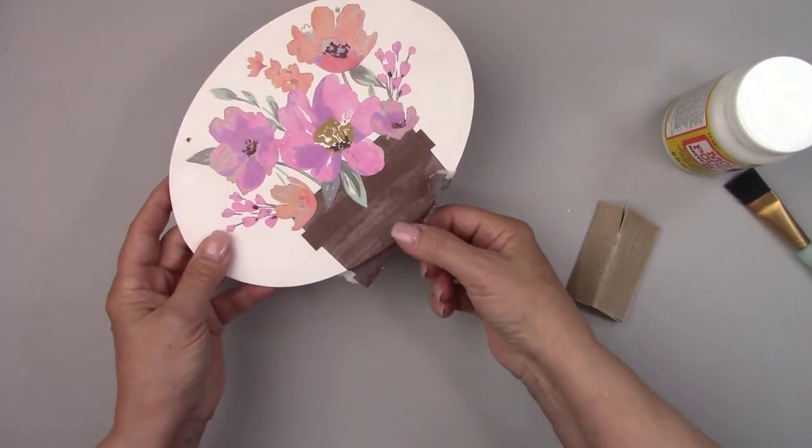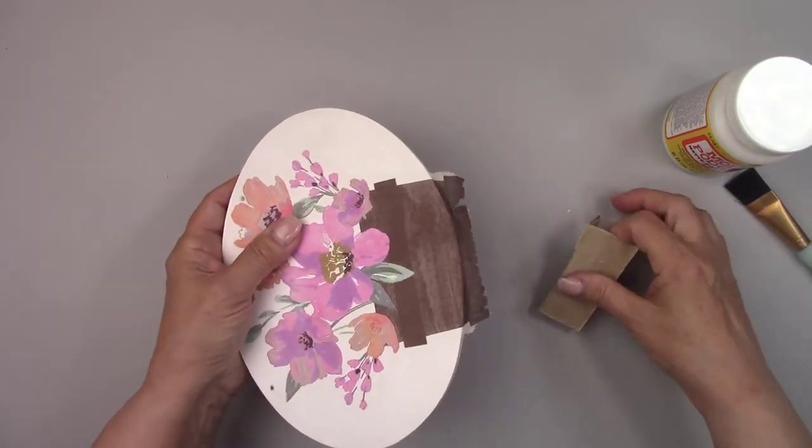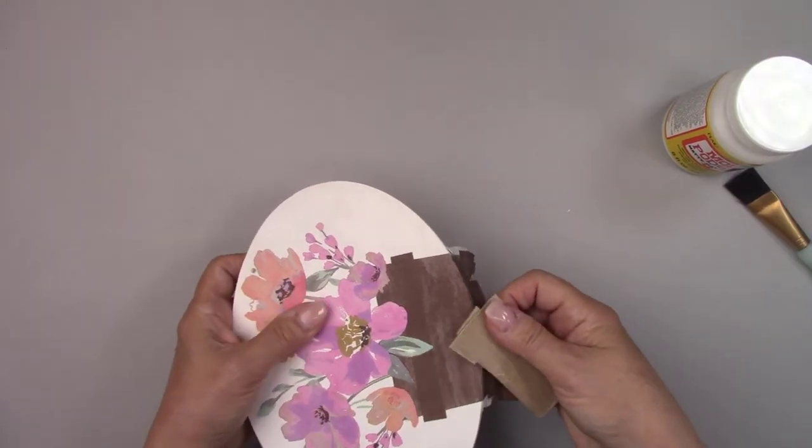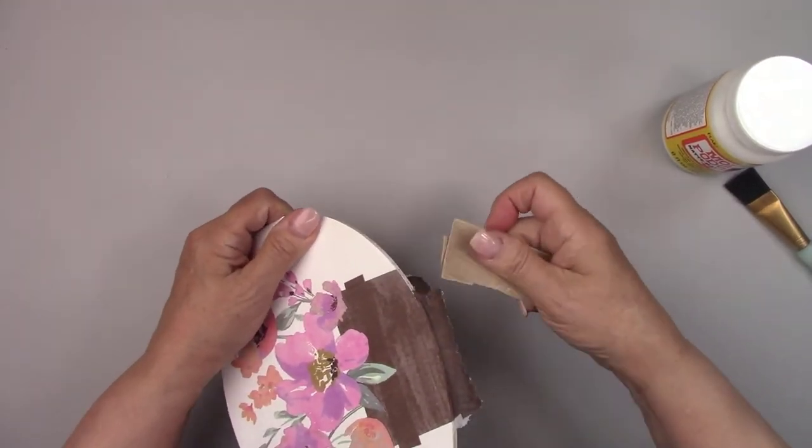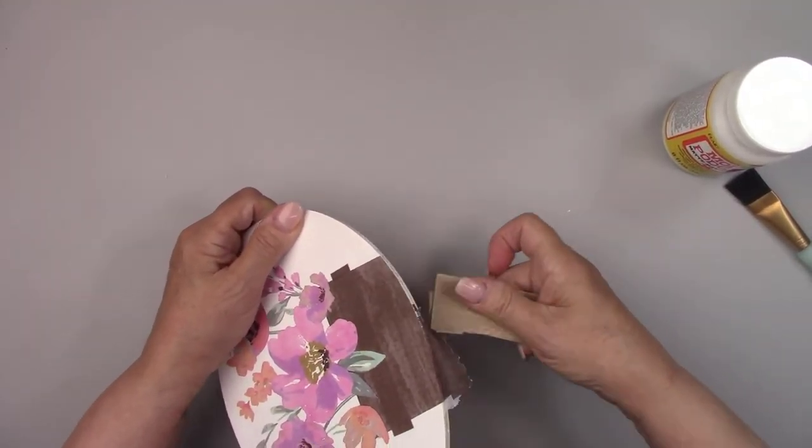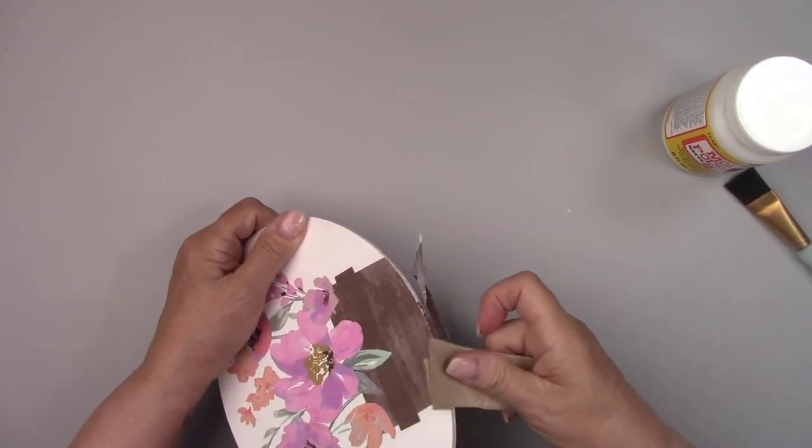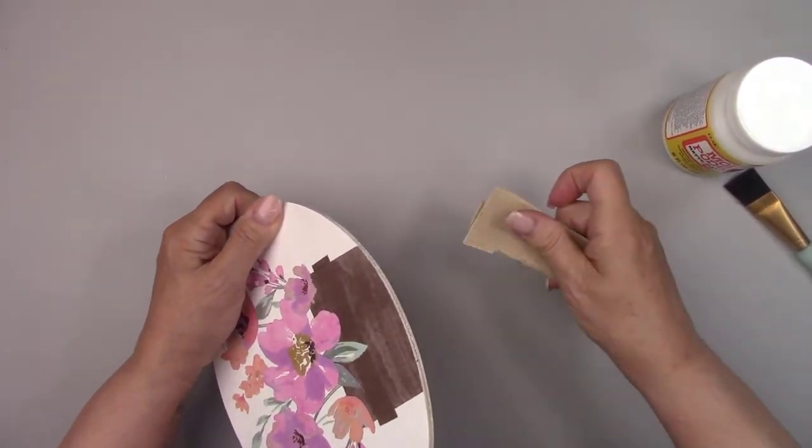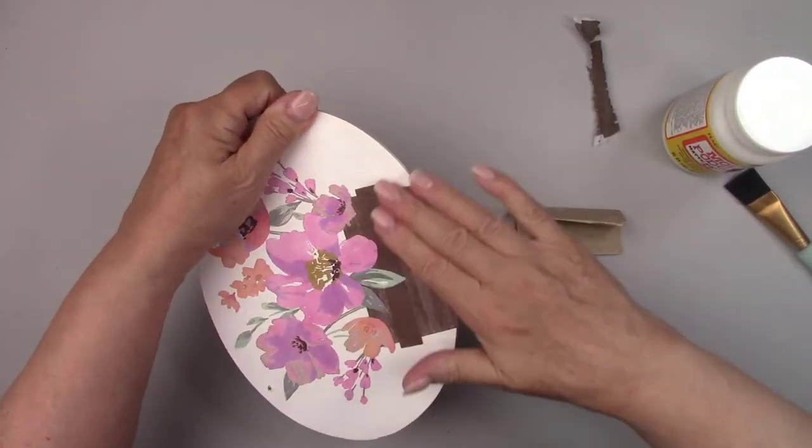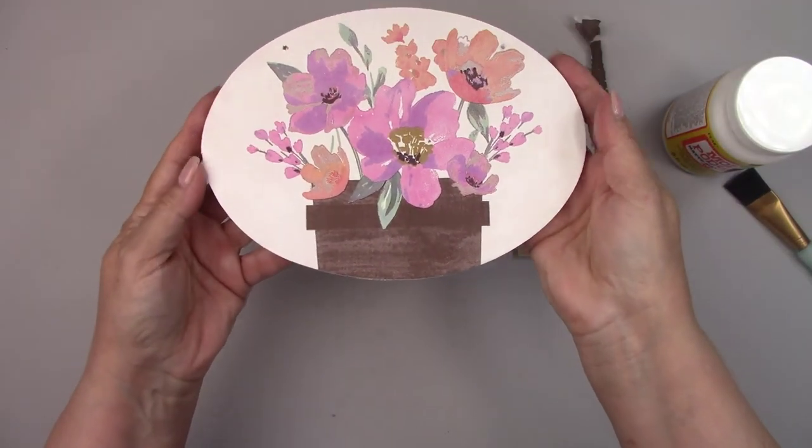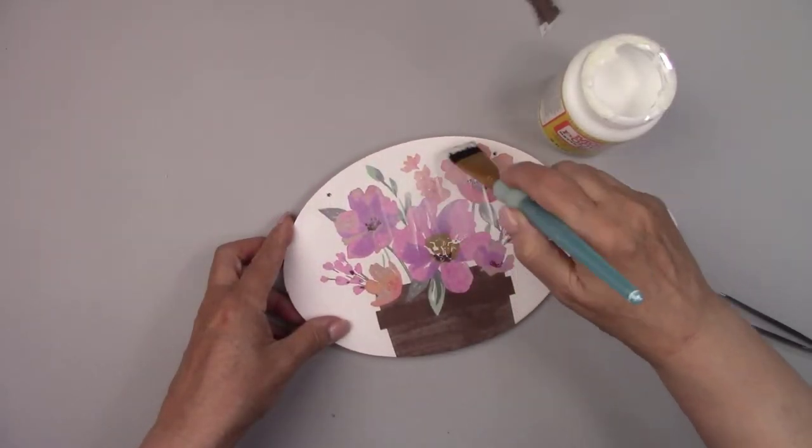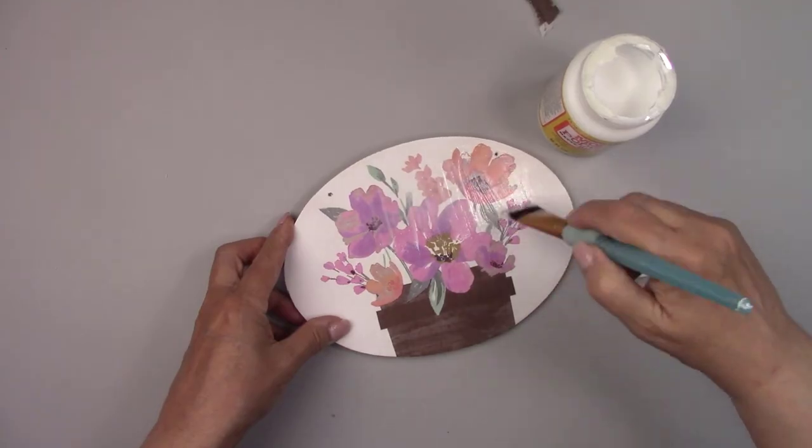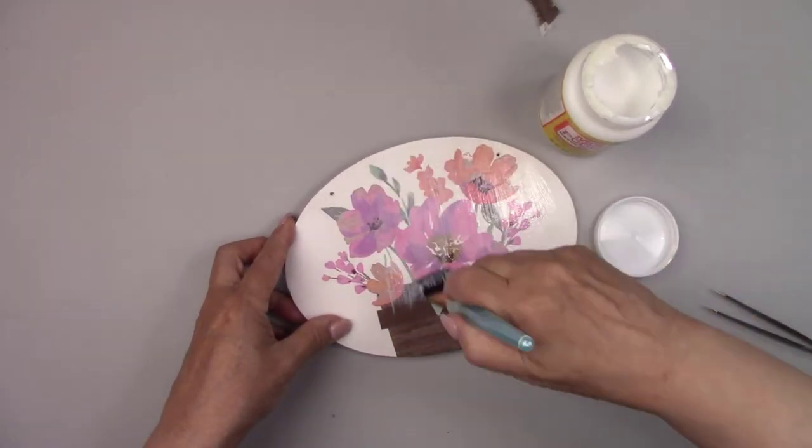I'm going to remove the bottom of the picture that's hanging over the edge with a piece of sandpaper and then put a coat of Mod Podge over the entire picture to seal it. Don't be alarmed if you see some small wrinkles pop up. They'll go away again as it dries.